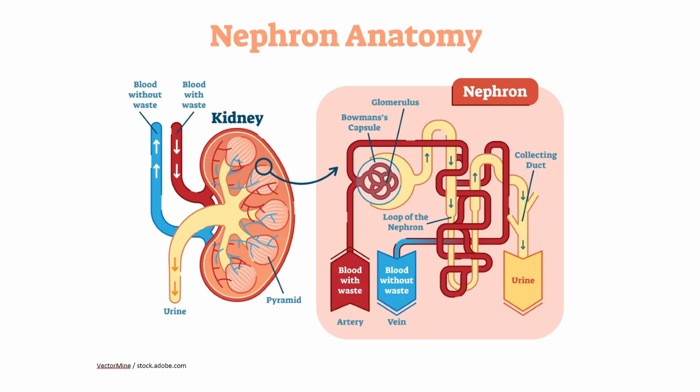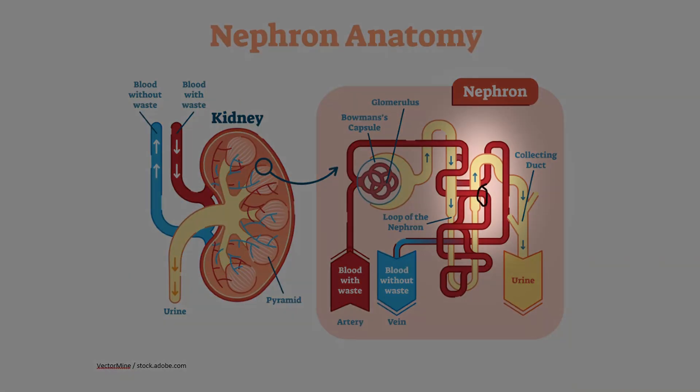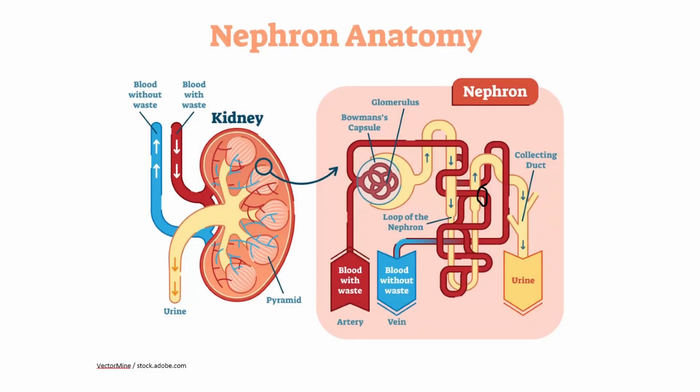Let's talk about furosemide. What furosemide is going to do in the nephron is it is going to bind to the thick ascending limb and block the sodium potassium chloride symporter. So that's going to be right around here in this thick ascending limb. The symporter is going to be right around that area, and what furosemide is going to do is block that.